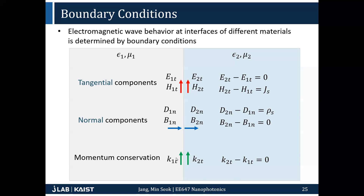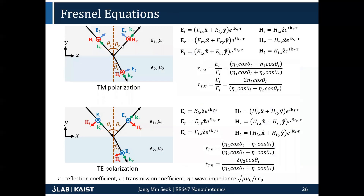The momentum conservation here is not basically an actual boundary condition, but it's convenient to use. You have four boundary conditions about the electric field component parallel to the surface, perpendicular to the surface, and the magnetic field parallel and perpendicular to the surface. Consider that you have an electromagnetic wave impinging on a surface between two different materials — epsilon 1, mu 1 to epsilon 2, mu 2 — and the interface is flat. You want to calculate how much light is reflected and how much is transmitted.